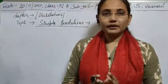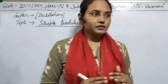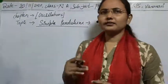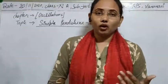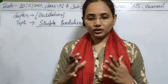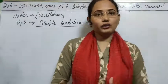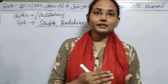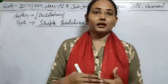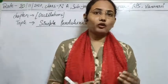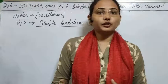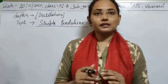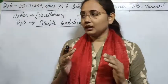Yesterday we covered the simple pendulum, which is based on simple harmonic oscillations. We saw how to produce oscillations in a simple pendulum and what conditions are required to get simple harmonic motion — the thread should be weightless, inextensible, and flexible, and the bob should be a point mass and heavy.